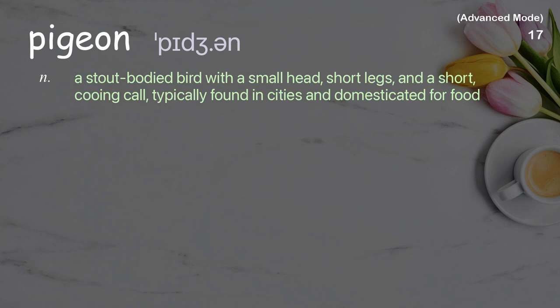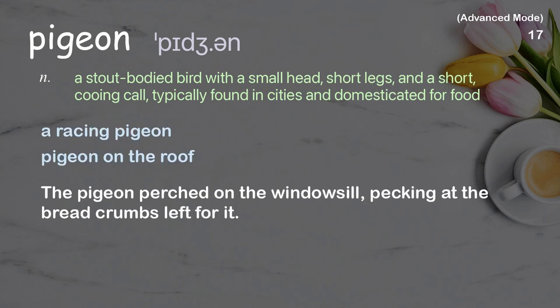Pigeon. A stout-bodied bird with a small head, short legs, and a short cooing call, typically found in cities and domesticated for food. Examples: racing pigeon, pigeon on the roof. The pigeon perched on the windowsill, pecking at the bread crumbs left for it.